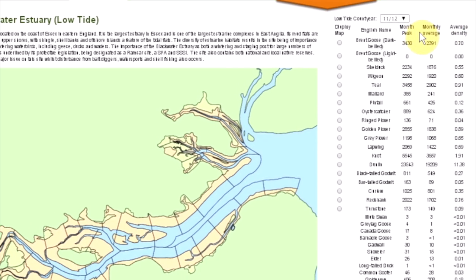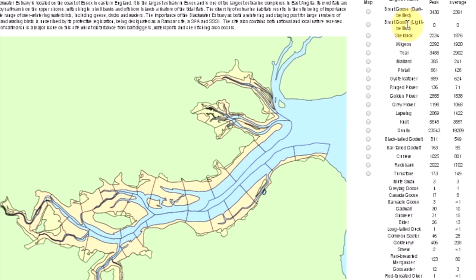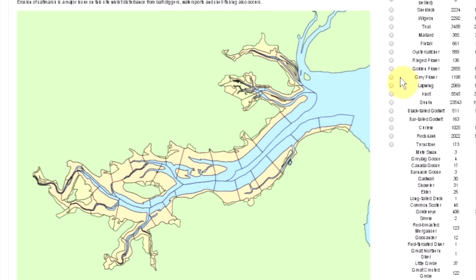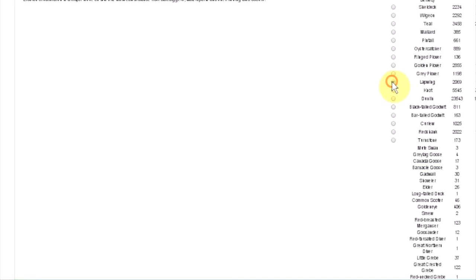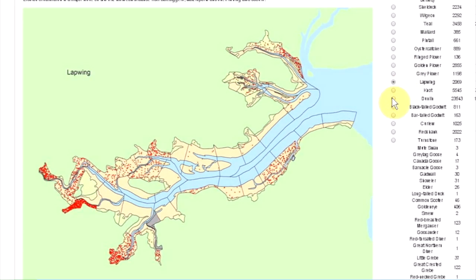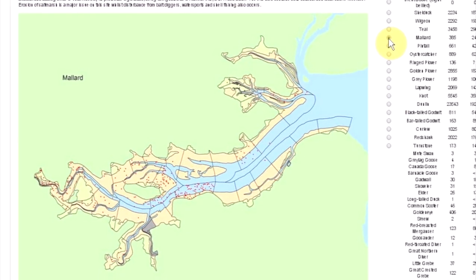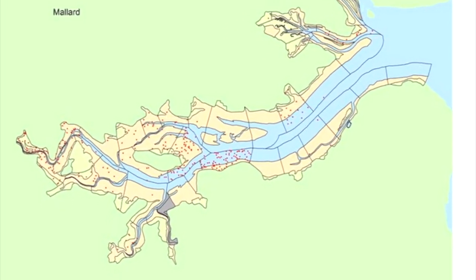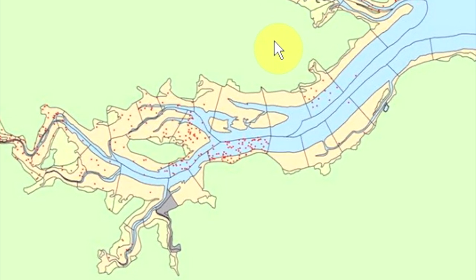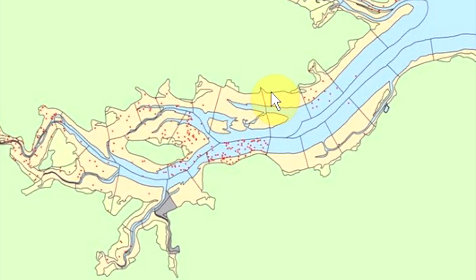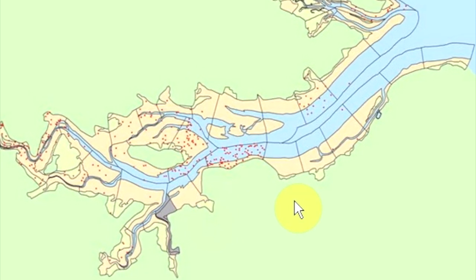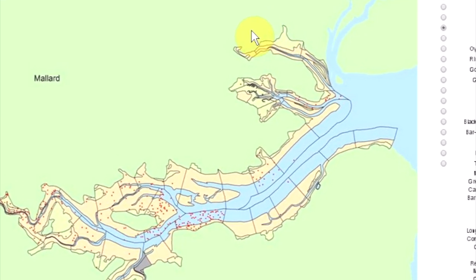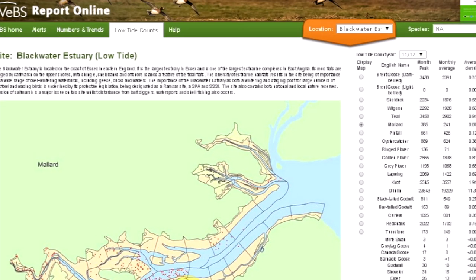You can view the dot density maps for up to 18 of the more numerous water bird species by clicking here. The dots represent the average count for each section — there is one dot per bird, but the dots are randomly placed within the sector. The grey areas indicate sections that were not counted, and there is a difference in shading to indicate the tidal and non-tidal sectors.